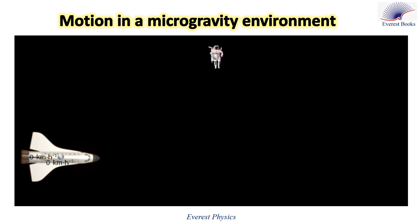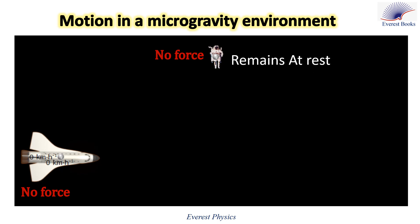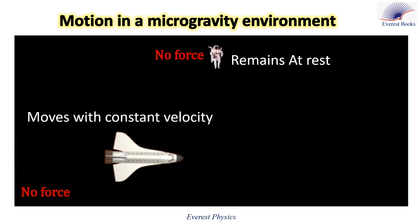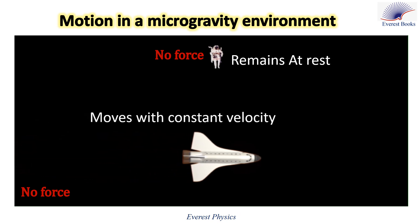Now consider objects in a microgravity environment where the force of gravity is very weak. There are no forces acting on the astronaut or on the spaceship. The astronaut, initially at rest, remains at rest. Meanwhile, the spaceship, initially in motion, continues at a constant velocity.